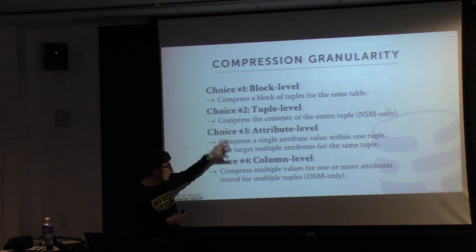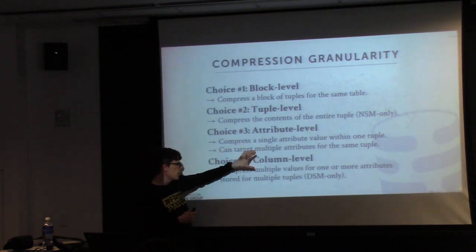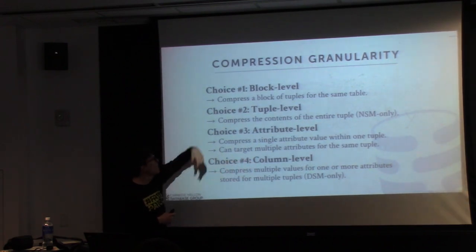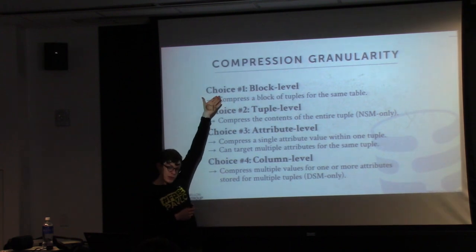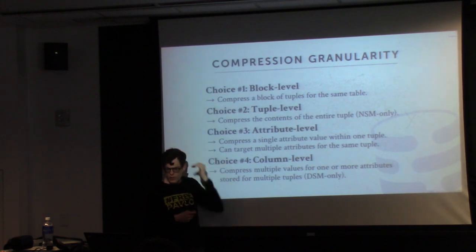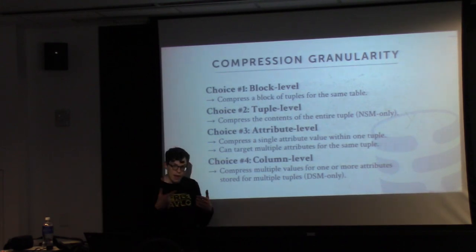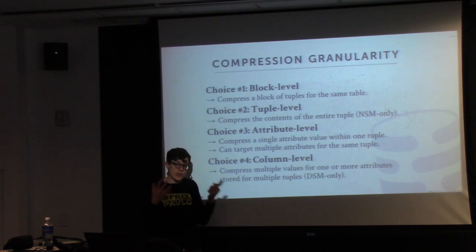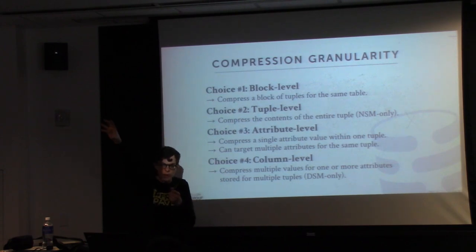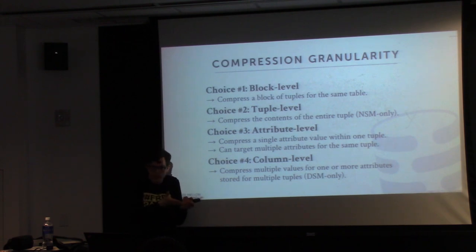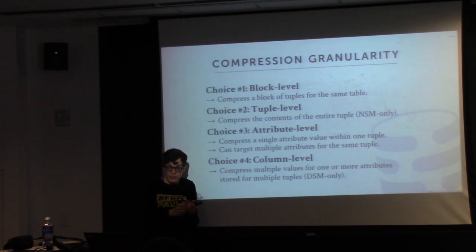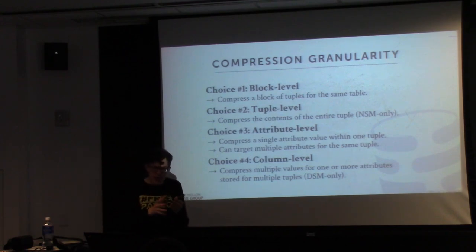HANA, Hyper, and DB2 Blue do column-level compression. MySQL and Oracle do block-level, though Oracle does it for recovery reasons — they require every block to be self-contained. If you use dictionary compression where one page stores compressed values and another stores the dictionary, corrupting the dictionary page means you lose compressed data. Oracle's philosophy ensures damage is always contained to a single block.